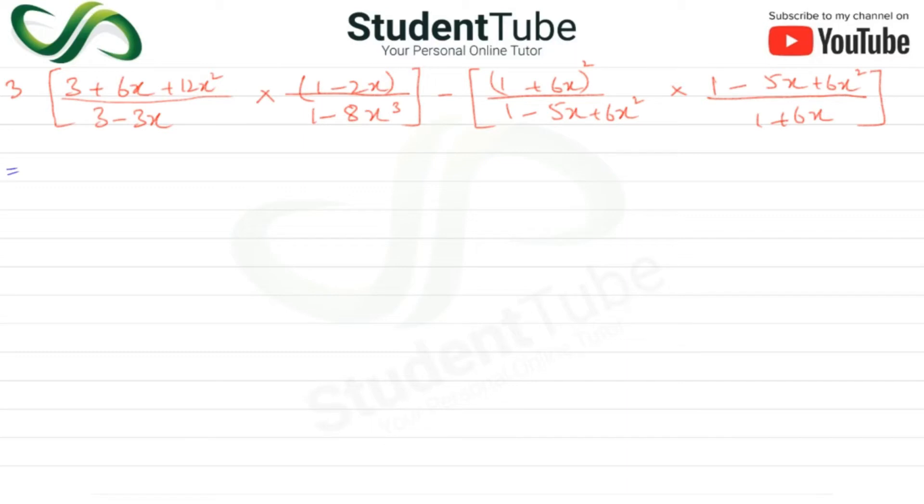We have 3 plus 6x plus 12x squared upon 3 minus 3x, like this.